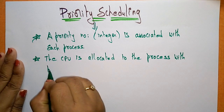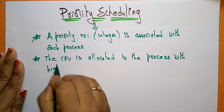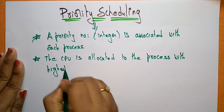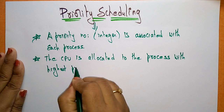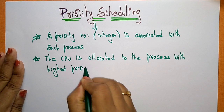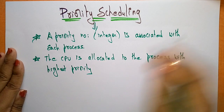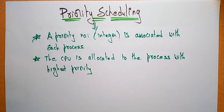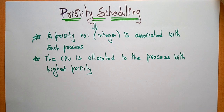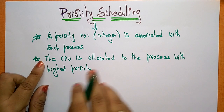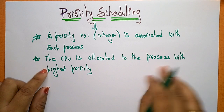Priority scheduling takes the smallest integer as the highest priority. So if zero is assigned, that is the highest priority; if one is there, that is the next highest priority, and so on. The CPU is allocated to the process with the highest priority.